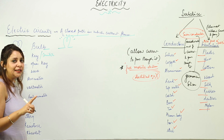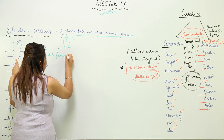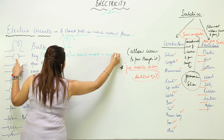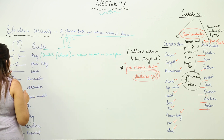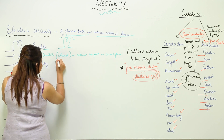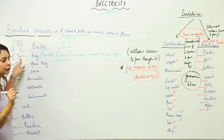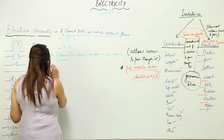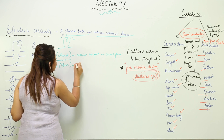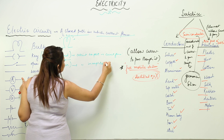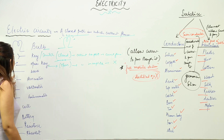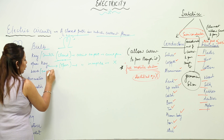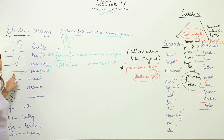A closed key means the circuit is complete and current flows. A closed key is also denoted as a big line with two dots. An open key means the circuit is open — that is, the circuit is incomplete, broken at a certain place — and no current will flow. Third is the wire: we need a wire to connect devices, and wire must be made of a conductor. It is shown as a straight line.